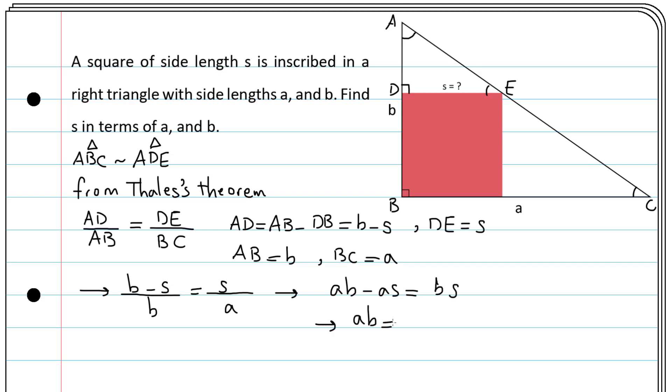And therefore ab equals bs plus as. From here we conclude that s equals ab divided by a plus b.